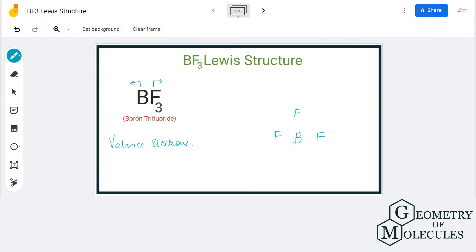Hey guys, today in this video we are going to look at the Lewis structure of BF3, boron trifluoride. To understand its Lewis structure, we'll first check the total number of valence electrons for this molecule. Boron has three valence electrons.